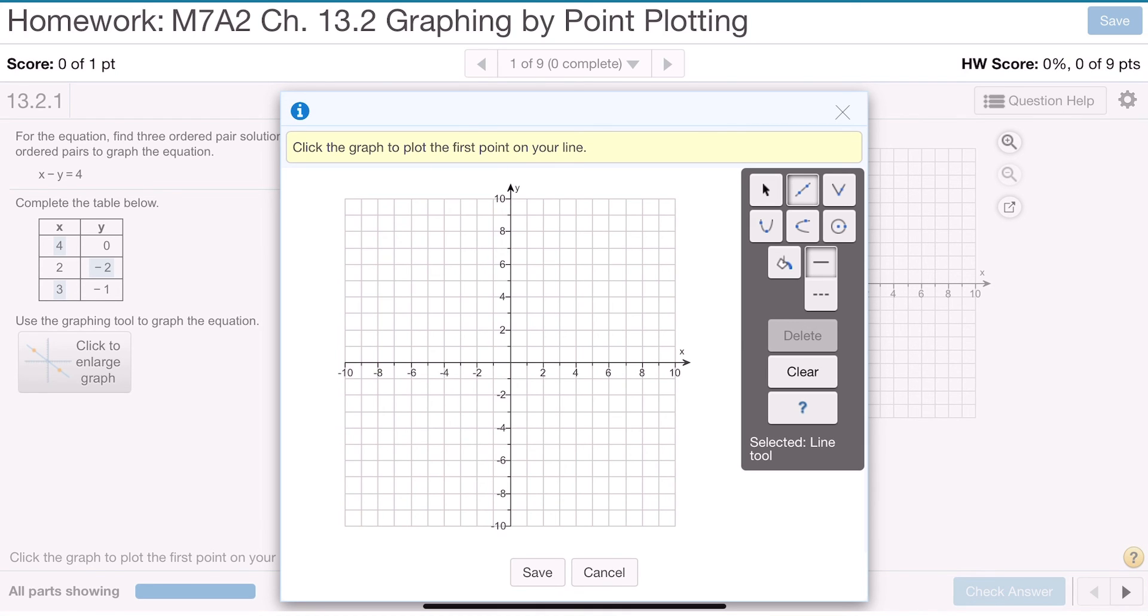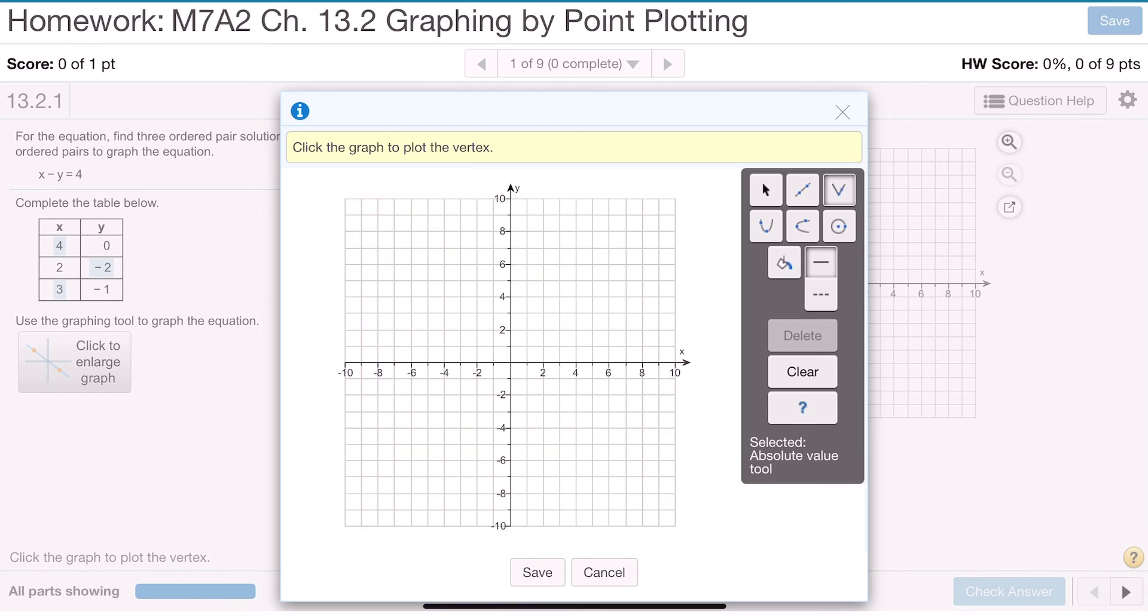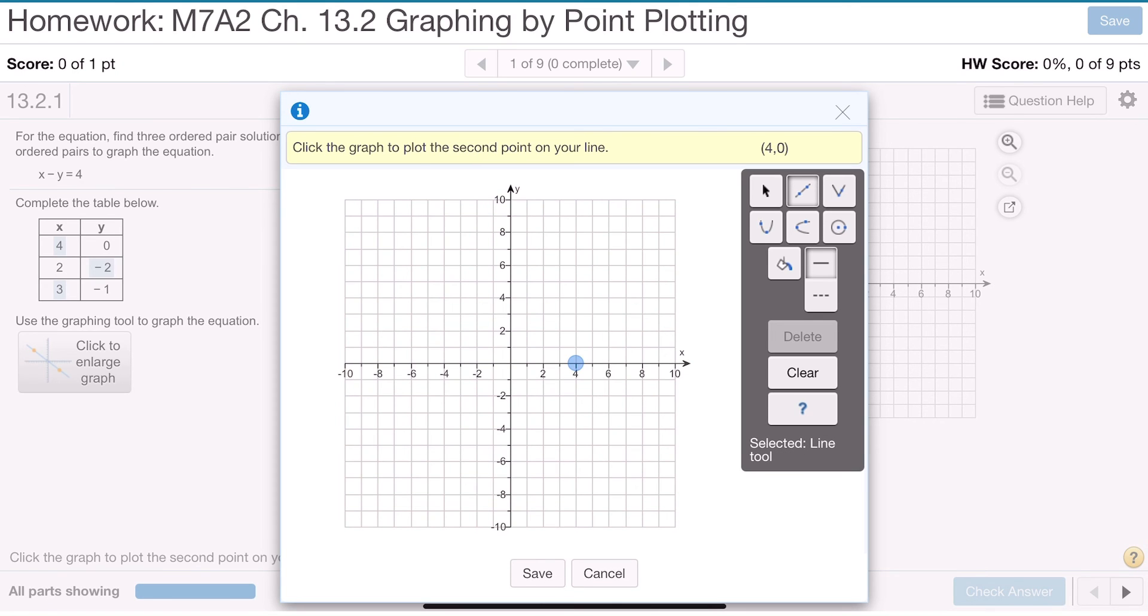Now, nothing has changed on your graph because we haven't decided what we want to do with it yet. So, I'm going to plot the point 4, 0. Well, 4, 0 is over 4, and then you place a dot at 0. Now, we're using the line tool. So far, we have a large blue dot. That's all we have.